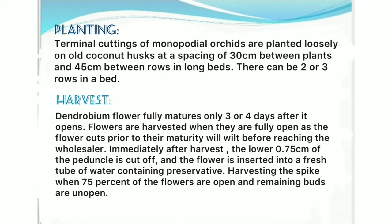Planting: Terminal cuttings of monopodial orchids are planted loosely on old coconut husk at a spacing of 30 cm between plants and 45 cm between rows in long beds, with two or three rows per bed. Harvest: Dendrobium flower fully matures only three or four days after it opens. Flowers are harvested when fully open, as flowers cut prior to maturity will wilt before reaching the wholesaler. Immediately after harvest, the lower 0.75 cm of the peduncle is cut off and the flower is inserted into a fresh tube of water containing preservative. The spike is harvested when 75% of the flowers are open and remaining buds are unopened.